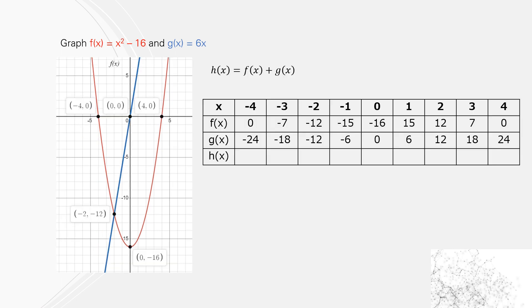So there are all the coordinates. For each of the values of x, we're going to add the y-coordinates to come up with the y-coordinates for h(x). So let's just do the first one: when x = -4, f(x) = 0, g(x) = -24, h(x) = -24.